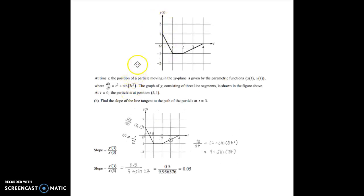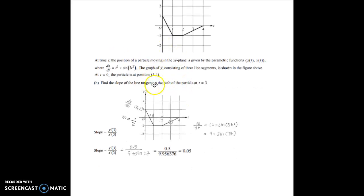So here's an example problem. At time t, the position of a particle moving in the x-y plane is given by these parametric functions. It's asking to find the slope of the tangent line at 3. So to find the slope we have to find y prime of 3 divided by x prime of 3 because it's the tangent line.